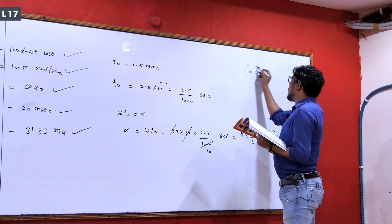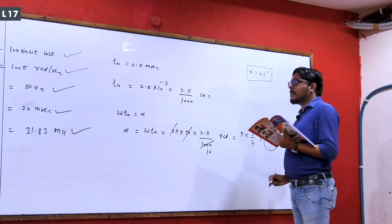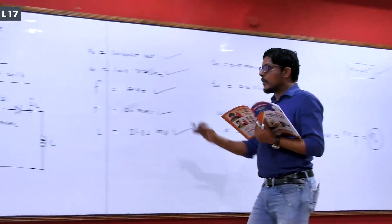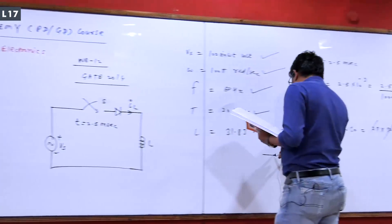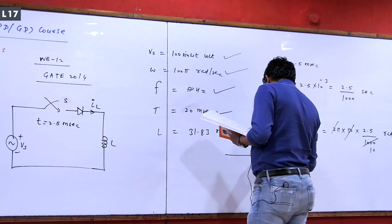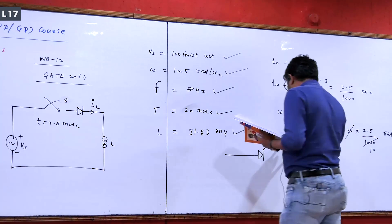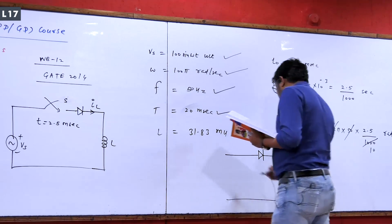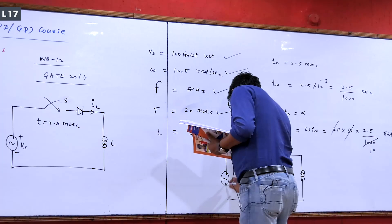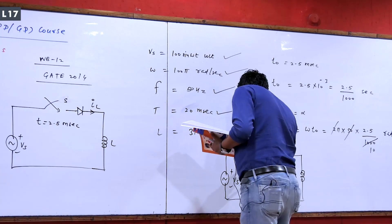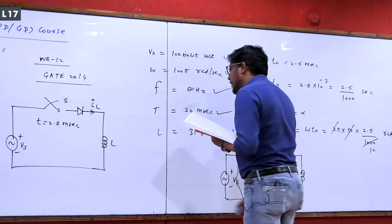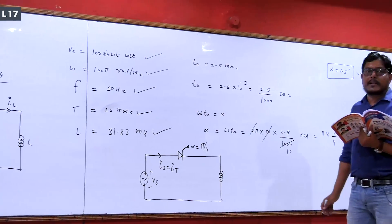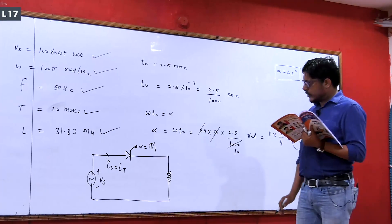So if the delay angle is given in time, I convert it to find alpha equals 45 degrees. This means the diode circuit with a switch closing at t=2.5ms is equivalent to a thyristor circuit with alpha equal to 45 degrees (pi by 4), driving a pure inductive load. Sometimes question framers replace the thyristor with a diode plus a switch and specify the close time — essentially it's a 45-degree delay angle.